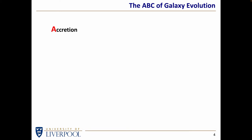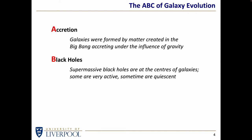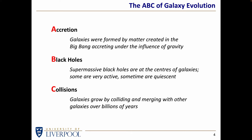The ABC starts with A for accretion, meaning that galaxies were formed by matter created in the Big Bang, accreting or accumulating under the influence of gravity. B stands for black holes — very large, so-called supermassive black holes are at the centres of many if not all galaxies. Some are very active with matter falling in generating huge amounts of energy; some are more quiescent, such as the black hole at the centre of our own galaxy. And finally C stands for collisions, because in galaxy evolution collisions and mergers are the prime method by which galaxies grow and change over their lifetimes, which can be many billions of years.